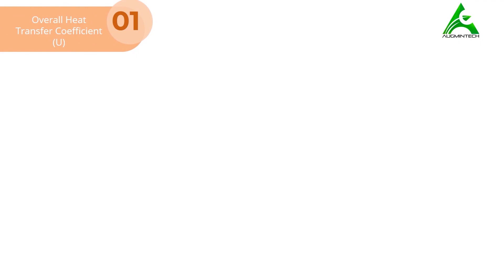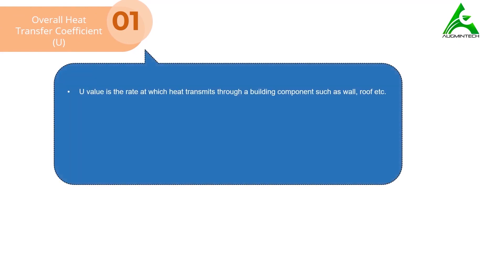Overall Heat Transfer Coefficient, most commonly known as U-Value, is the rate at which heat transmits through a building component such as wall, roof, ceiling, partition, floor, etc.